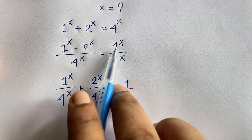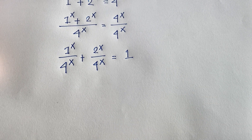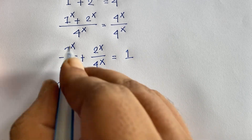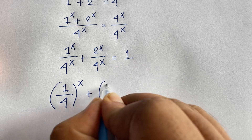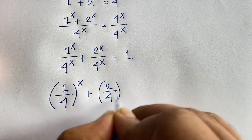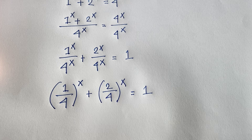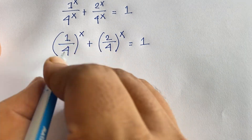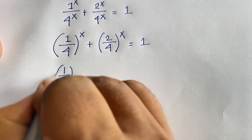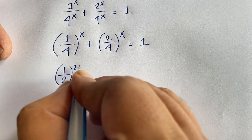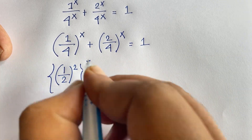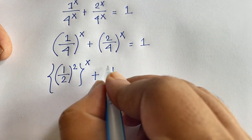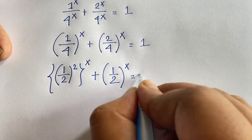Since 4^x divided by 4^x equals 1, I can write: (1/4)^x + (2/4)^x = 1. Now (1/4) can be written as (1/2)^2, so it becomes (1/2)^(2x). And 2 over 4 is 1/2, so (1/2)^x. Therefore (1/2)^(2x) + (1/2)^x = 1.